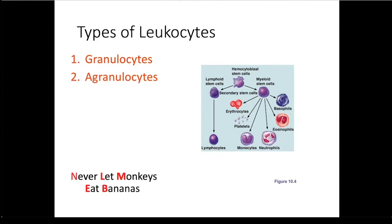The saying at the bottom of the slide, never let monkeys eat bananas, can be used to help you remember which type of leukocyte is the most abundant and which one is the rarest. The N stands for neutrophils, L for lymphocytes, M for monocytes, E for eosinophils, and B for basophils, which are the rarest.